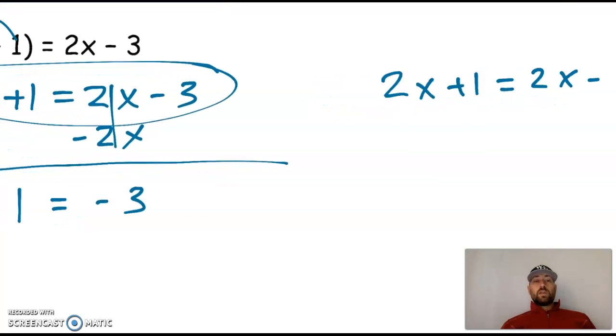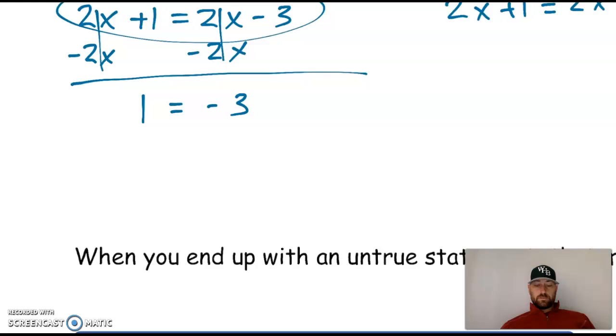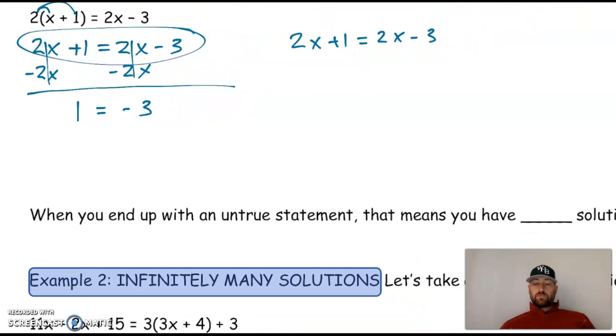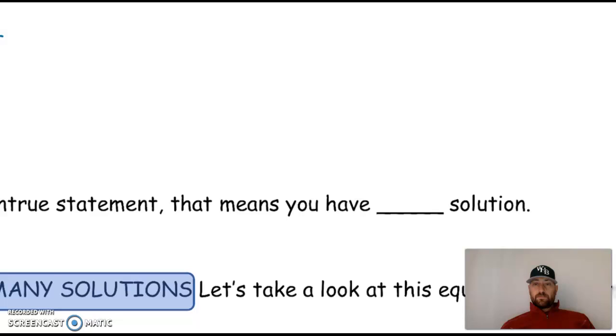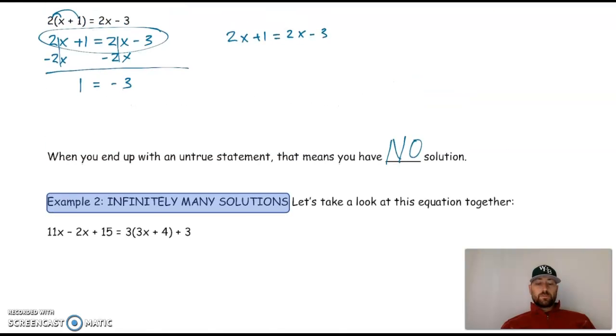How will that mostly look if we are ever left with an untrue statement? Right, that is one constant is set equal to a constant that is not the same thing. That is what we're going to call no solution. So no solution has same coefficient, different constant. Same coefficient, different constant. So you end up with an untrue statement. That means you have no solution, okay? No solution doesn't mean, oh, it's just a hard problem. I'm not going to have a solution. No solution means that we have an untrue statement, okay?